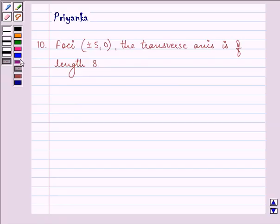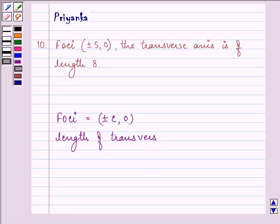Before proceeding with the solution, we should know that if the foci lies on the x-axis, then we have foci as equal to plus minus c comma 0, and the length of transverse axis is equal to 2a.